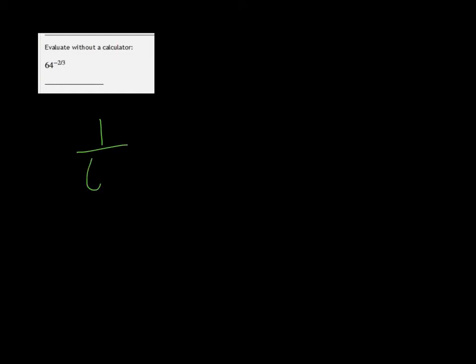Alright, we want to evaluate 64 to the negative two-thirds without a calculator. Well, let's rewrite it as 1 over 64 to the positive two-thirds, because we're allowed to do that.